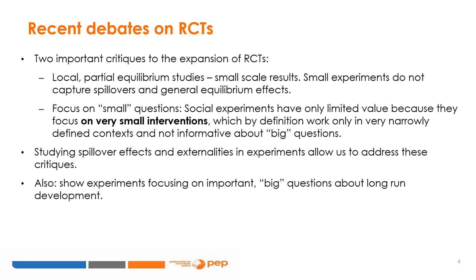In regards to the recent debates on randomized control trials, there are two important critiques to be looked at. On the one hand, critics say that RCTs focus mainly on local partial equilibrium studies with small-scale results. They argue that these small experiments do not capture spillovers and general equilibrium effects. On the other hand, critics have also pointed out that randomized control trials often focus on small questions, and therefore social experiments have only limited value because they focus on very small interventions which work only in very narrowly defined contexts and are not informative about big questions. In this module, we will study spillover and externalities effects in experiments that will allow us to address some of these critiques.